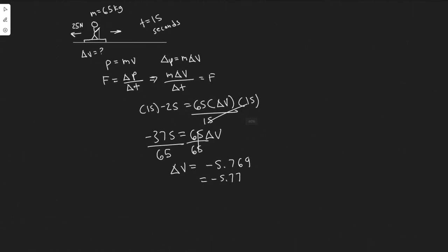The units of velocity are going to be meters per second. So the change in velocity for this problem is going to be minus 5.77 meters per second. That's the skier's change in velocity.